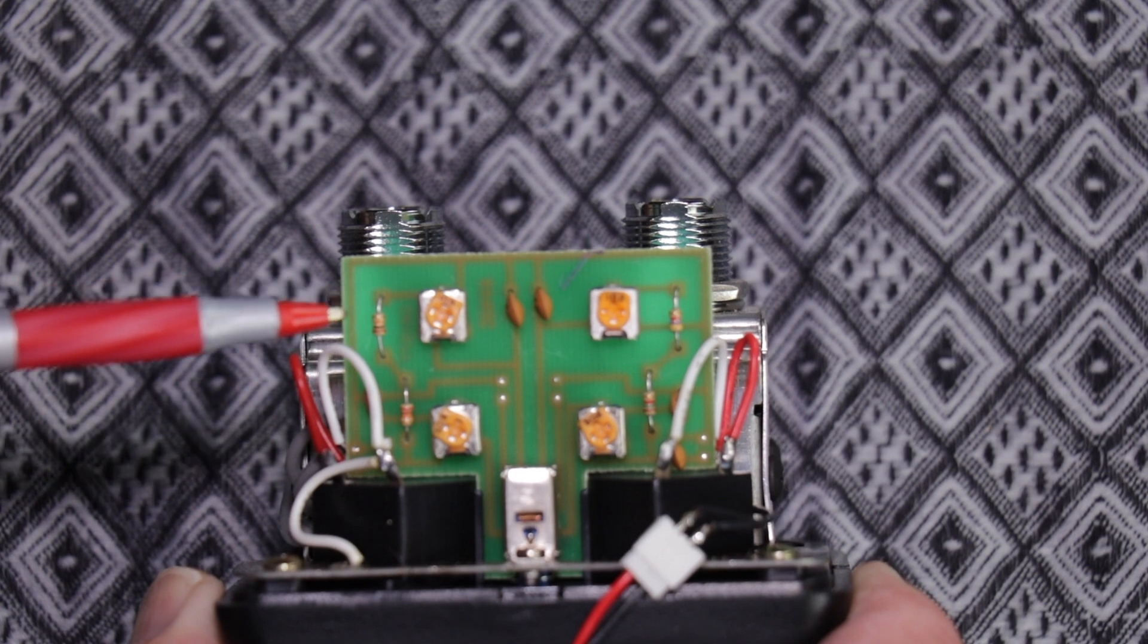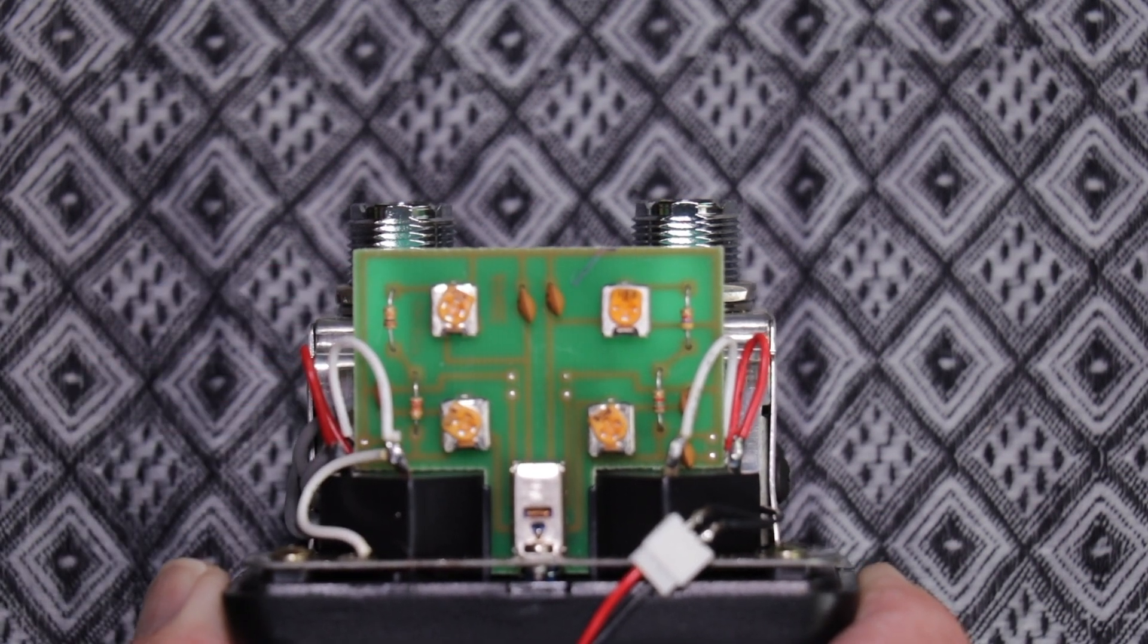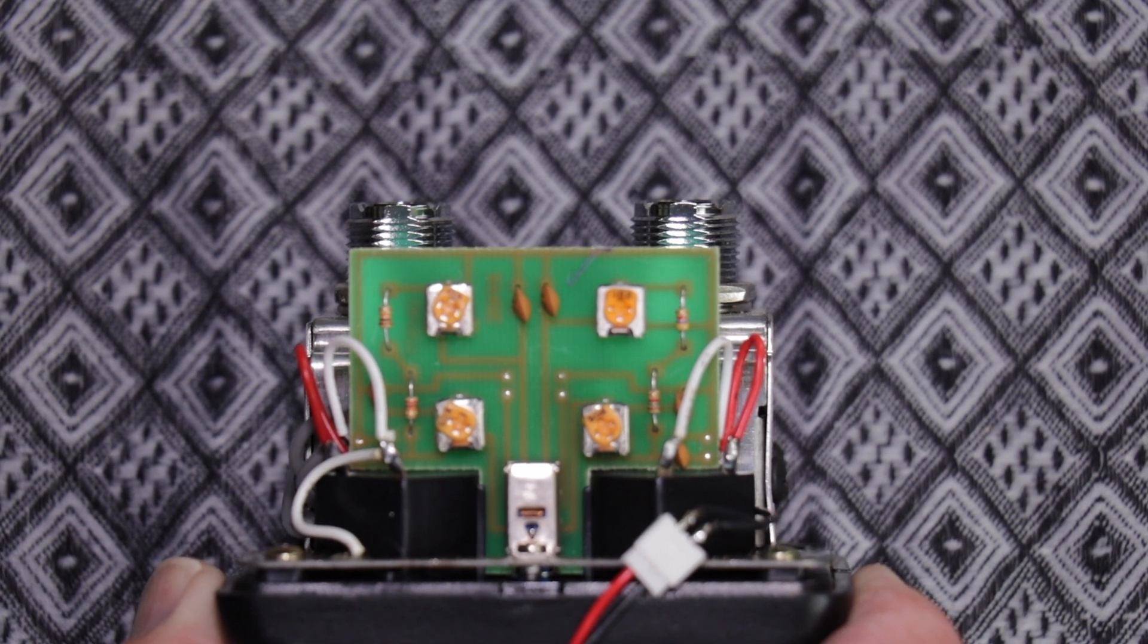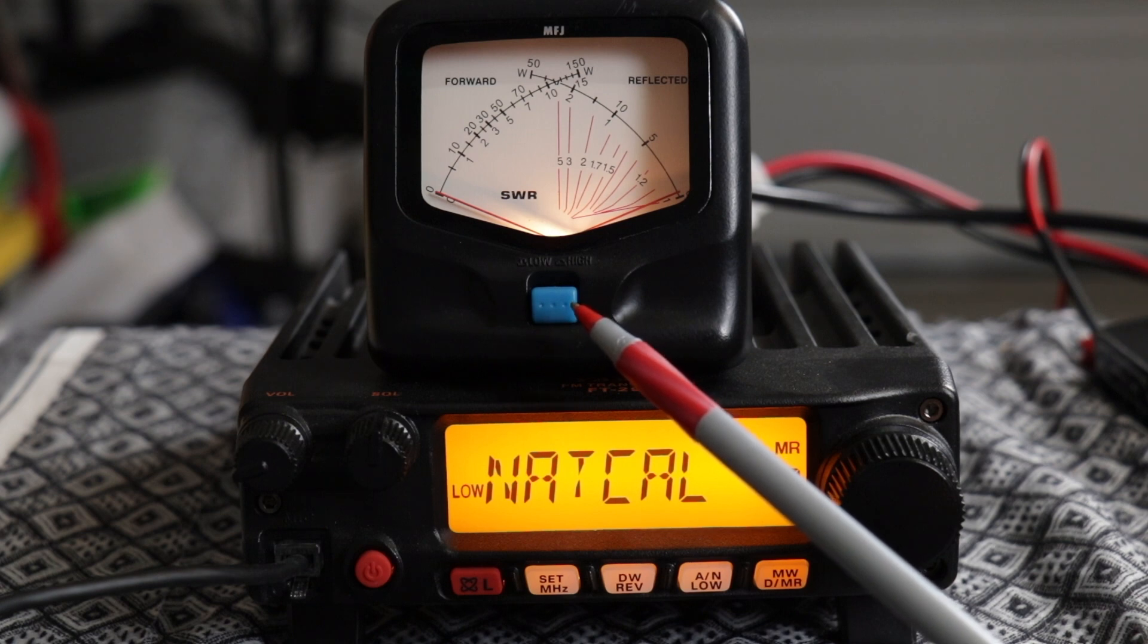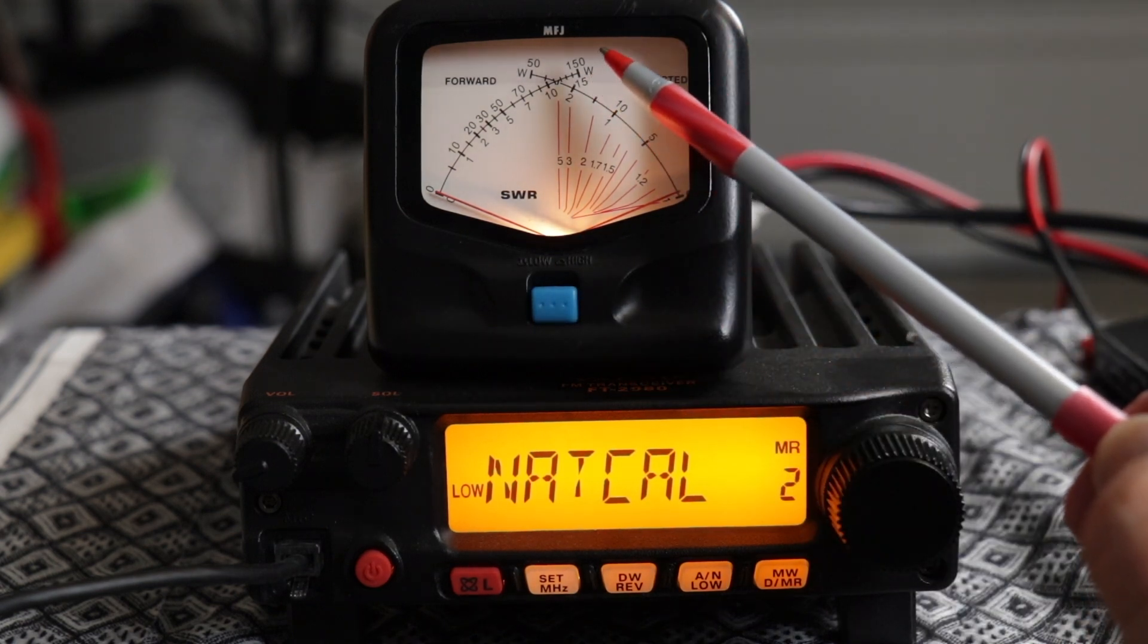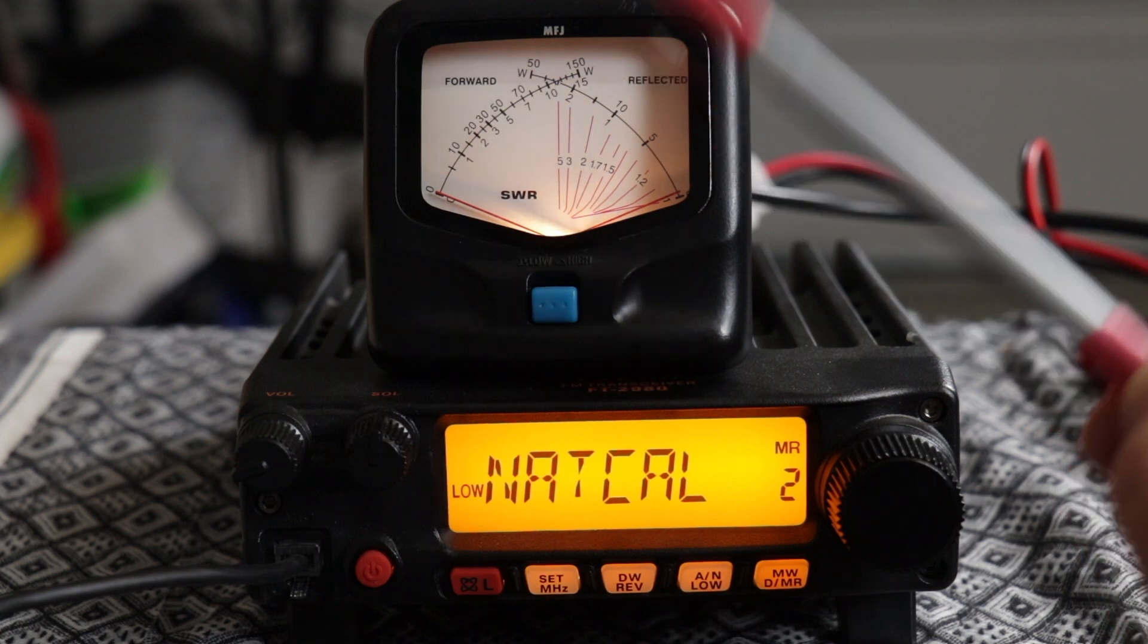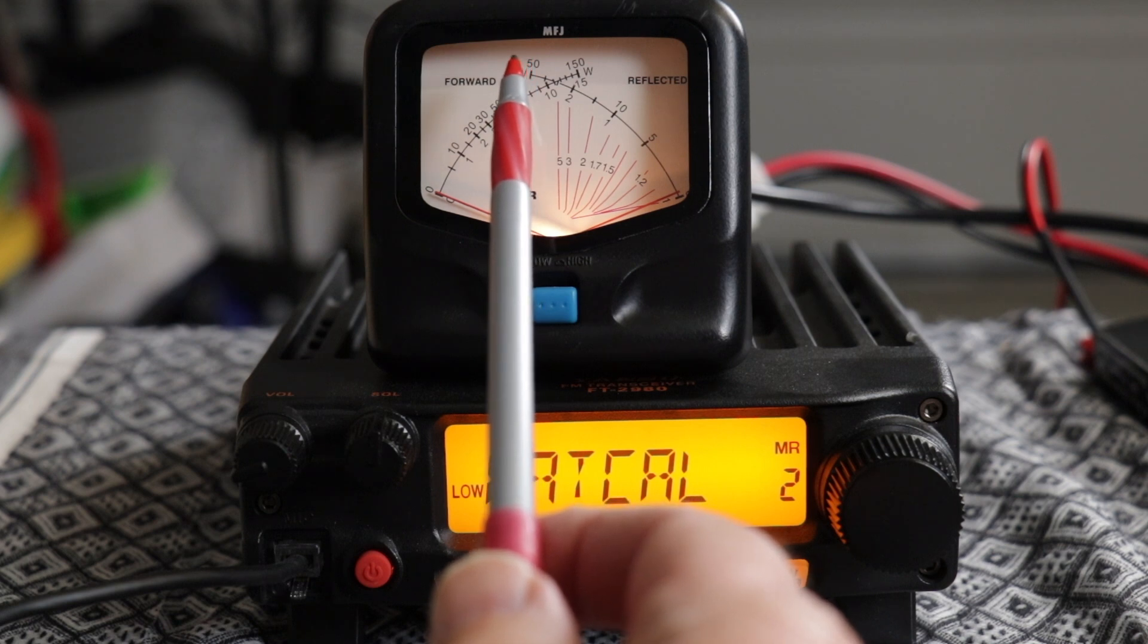You can calibrate it by using these four trim pots. You have high forward, low forward, high ref, low ref, and there are instructions in the owner's manual on how to do that. When the blue button is pushed out that's 15 watts, when it's pushed in that's 150 watts. You have 15 on the lower scale and 150 watts on the upper scale. For reflected you have 50 watts on the upper scale.